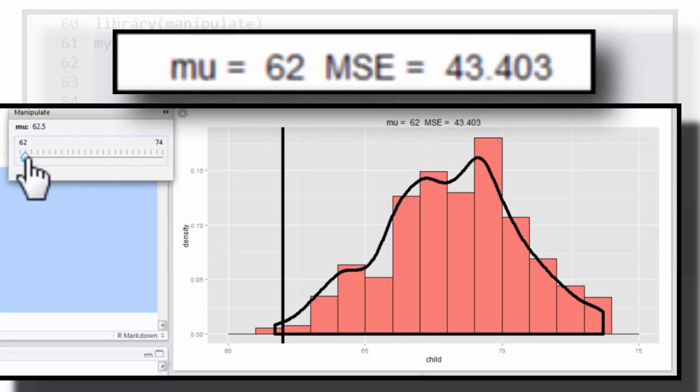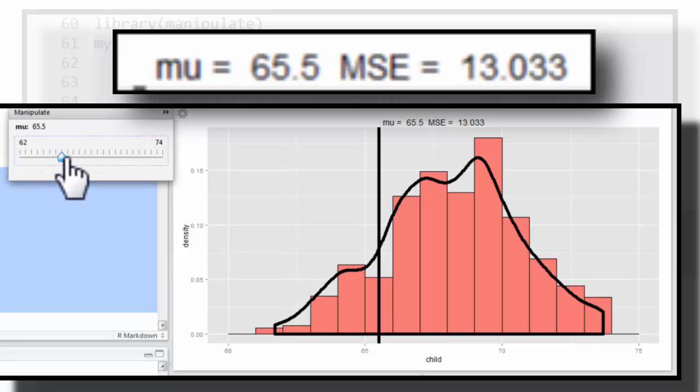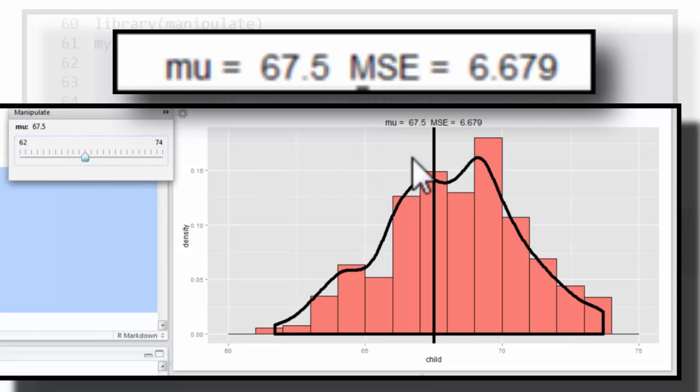Now notice as I move the mean around with manipulate, let's move it towards the center of the distribution. Notice the mean has gone up. Let's move it right here. The mean went up to 67.5, but the mean squared error dropped quite a bit. It helped balance out the histogram. That was almost the point where it would balance perfectly.